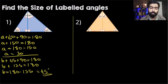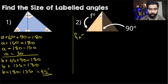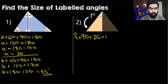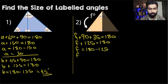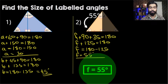Let's go ahead and solve for F. Forming an equation: F plus this right angle which is 90 degrees plus 35 degrees add up to 180 degrees. So F plus 125 is equal to 180. Subtracting both sides by 125, F is equal to 180 minus 125, therefore F is equal to 55 degrees.